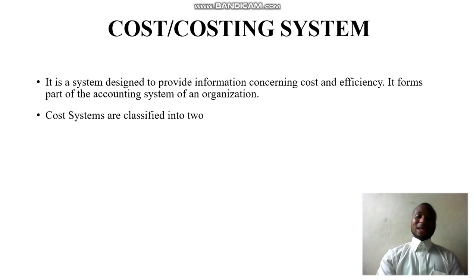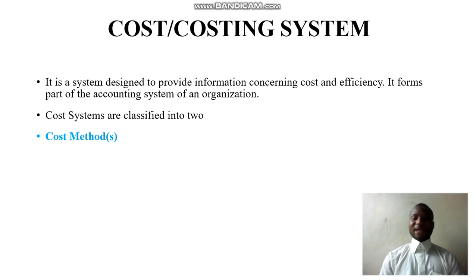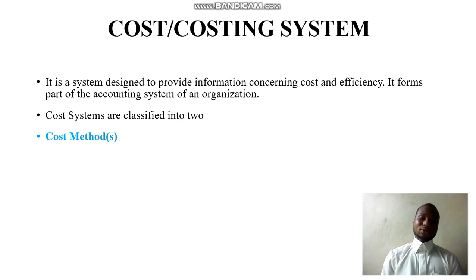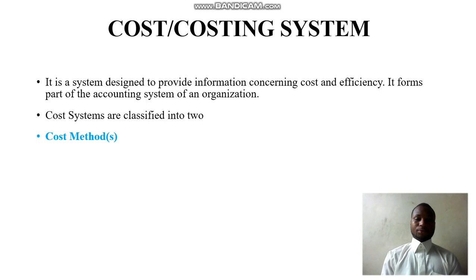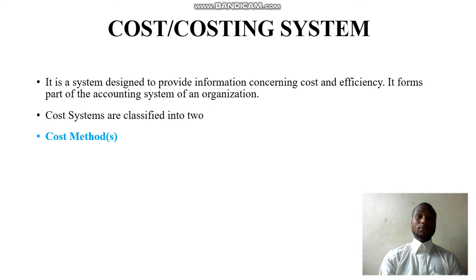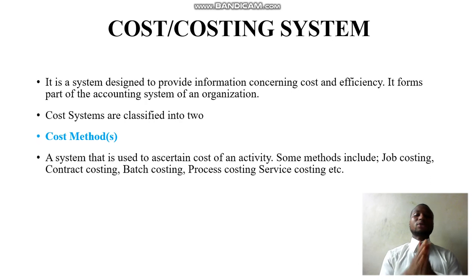Cost systems are classified into two: cost methods and cost techniques. Cost methods are those processes applied to determine the cost of activities — the cost of a product, a service, an activity, or a process. Examples include job costing, contract costing, batch costing, process costing, and service costing, among others.